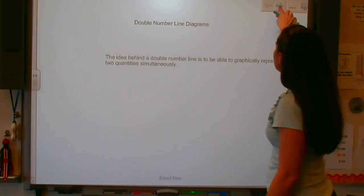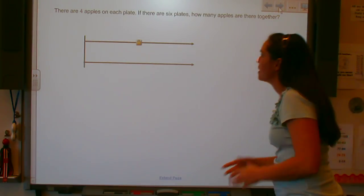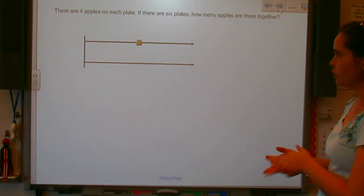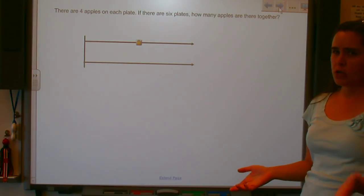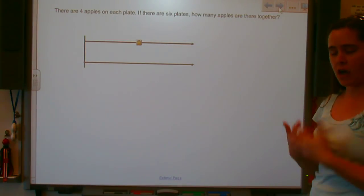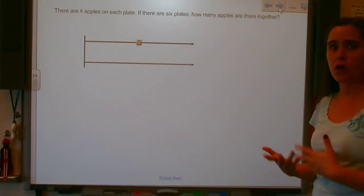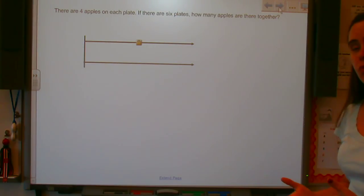Our first question says there are four apples on each plate. If there are six plates, how many apples are there all together? Most of us already know the answer and what operation we need to do, however, we want to show this graph on our double number line diagram.